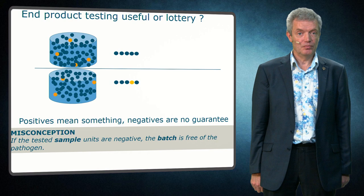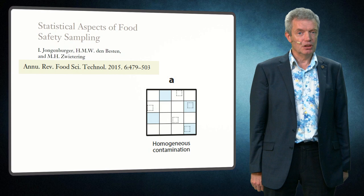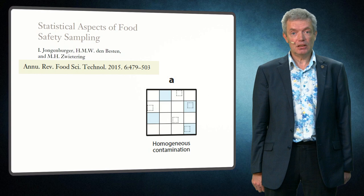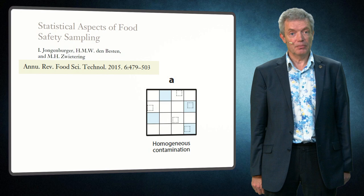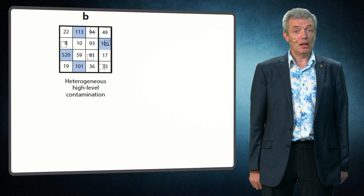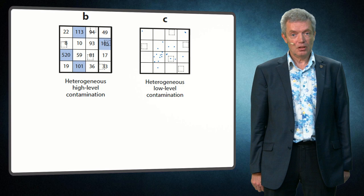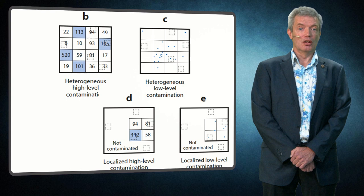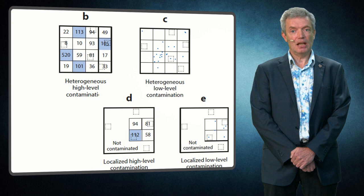All these aspects are described in a paper in Annual Reviews in Food Science and Technology, where we looked at all kinds of distributions of microorganisms and looked at homogeneously and heterogeneously distributed organisms, and looked at present/absent testing and quantitative testing. I will start with homogeneous contamination, but later we will also look at heterogeneous high-level contamination and heterogeneous low-level contamination. In this paper we also look at localized high-level contamination and localized low-level contamination, but for now we will only describe A, B, and C — and in this clip only A, the homogeneous contamination.